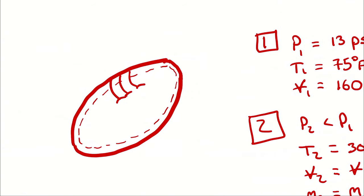I should also point out that my system is defined as the air inside the football, so the boundary of my system is the inside surface of the football. Normally I have to identify a control mass or control volume as my system, but here they are one and the same. Because the mass doesn't change, the system is a control mass, and because the volume doesn't change, it is also a control volume.